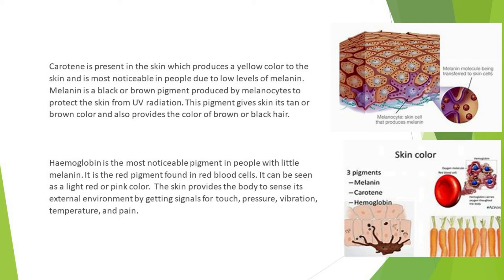Hemoglobin is the most noticeable pigment in people with little melanin. It is the red pigment found in red blood cells and can be seen as a light red or pink color. The skin provides the body the ability to sense its external environment by getting signals for touch, pressure, vibration, temperature, and pain.